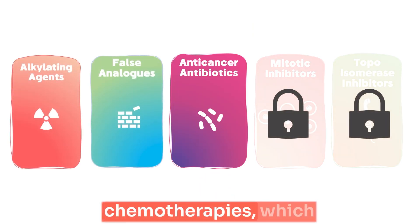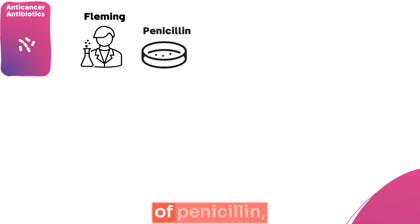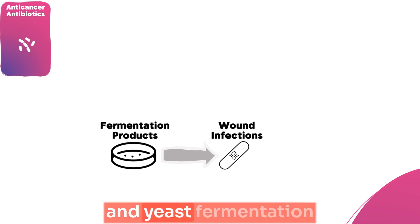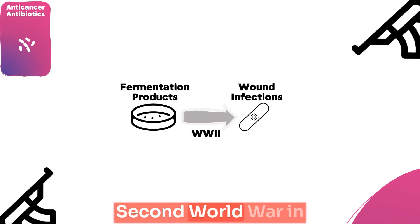Let's move to the third type of chemotherapies, which is the antibiotics. Right after Fleming's accidental discovery of penicillin, pharmaceutical industry was searching within both bacteria and yeast fermentation products for more antibiotics that can limit wound infection that was common in the Second World War.